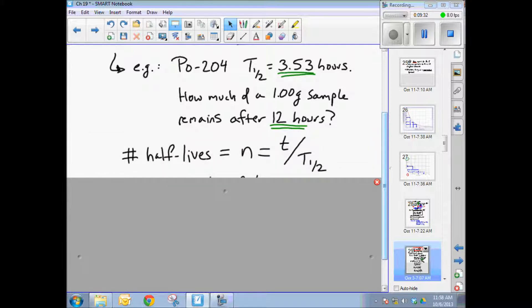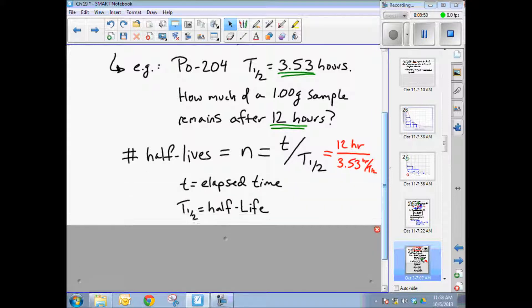So the number of half lives in this case is not a nice round number. It's going to be 12 hours is our total amount of elapsed time divided by the half life, which was 3.53 hours per half life. That tells you the number of half lives we've gone through. So T is elapsed time. T sub one half is of course the half life.